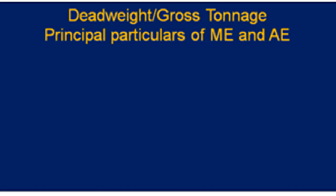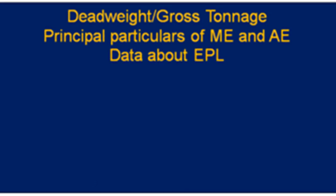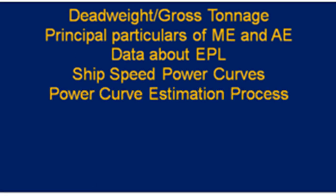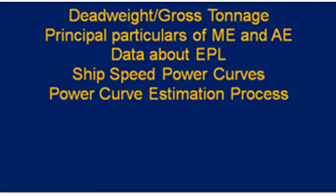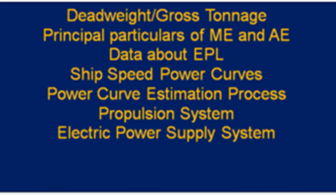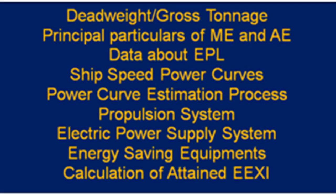The EEXI file contains: delivered tonnage, gross tonnage, principal particulars of main engine and auxiliary engine, data about EPL, ship speed, speed-power curve with estimation process, the propulsion system and electrical power supply system, energy saving equipment, and calculation of attained EEXI.